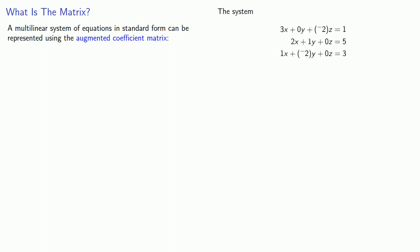So what is the matrix? There's many different answers to this question, but we'll start with this one. A multi-linear system of equations in standard form can be represented using an augmented coefficient matrix. Each row of the matrix is going to represent one equation where the entries of the row are the variable coefficients in order followed by the constant.